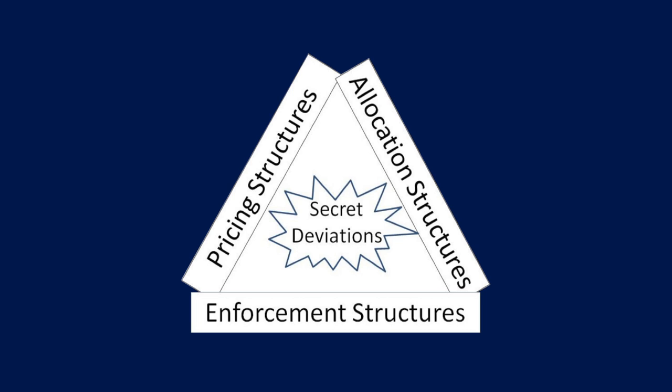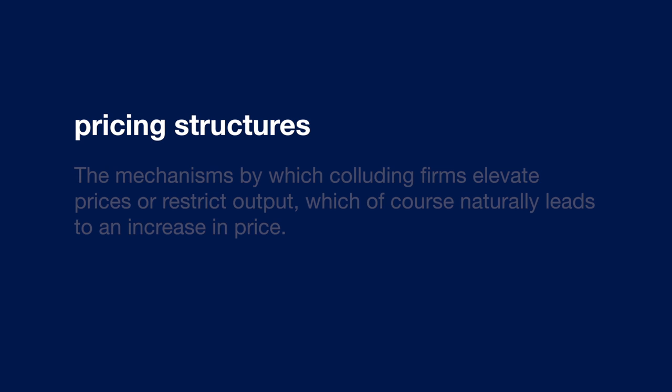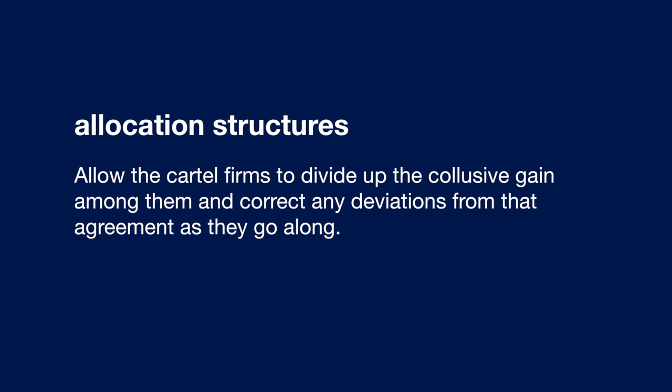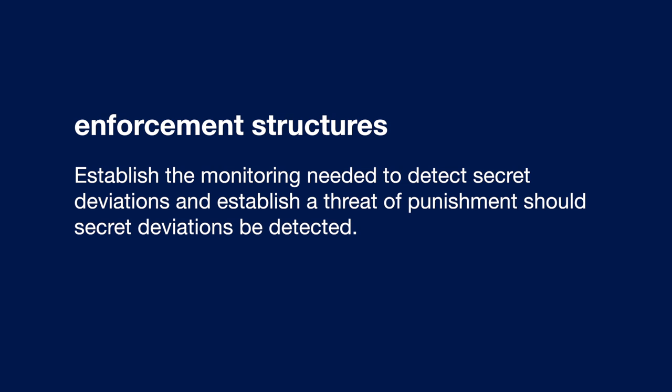However, Stigler noted that it is possible for firms to put in place structures that allow successful collusion. Specifically, he talked about how cartels need three types of structures: pricing structures, allocation structures, and enforcement structures. Pricing structures are the mechanisms by which colluding firms elevate prices or restrict output. Allocation structures allow the cartel firms to divide up the collusive gain among them and correct any deviations from that agreement. Enforcement structures establish the monitoring needed to detect secret deviations and a threat of punishment should they be detected. I'd like to focus on the pricing structures used in the Vitamins Cartel, a case I worked on as a consulting expert.